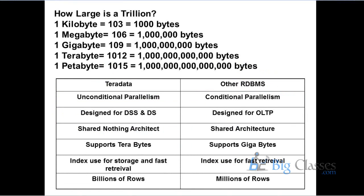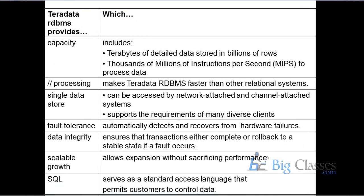Teradata can handle billions of records and process billions of instructions per second. Parallel processing is the key fundamental feature of Teradata RDBMS which makes it faster than any other relational database system. It's a single data store that can be accessed by two different types of systems: a channel attached system and a network attached system.